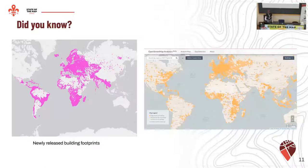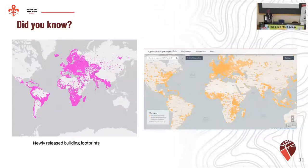On the other side, we also have a snapshot from OSM Analytics which just shows the current building density in OSM. And I think we can see where the gaps are — there's an opportunity for us here to utilize these buildings and at least improve the base map in Africa and other continents.